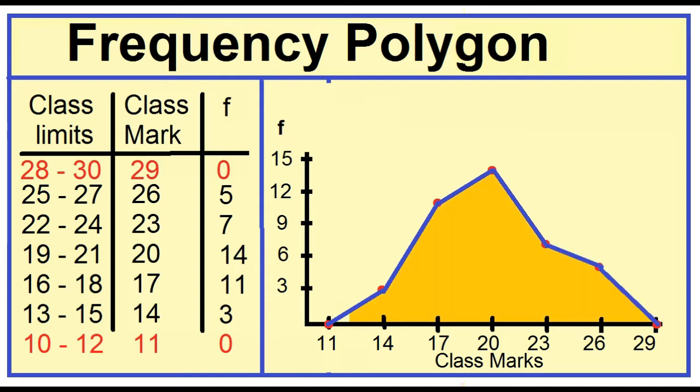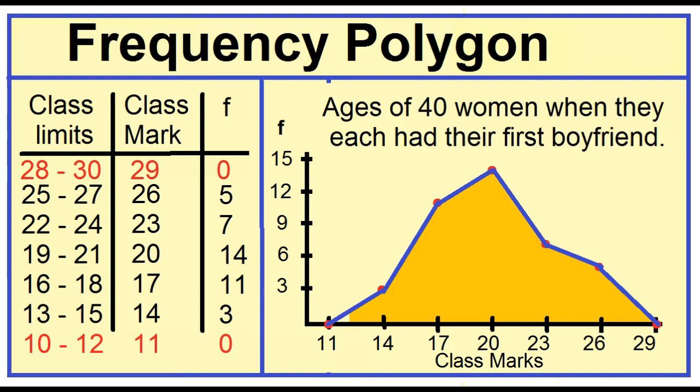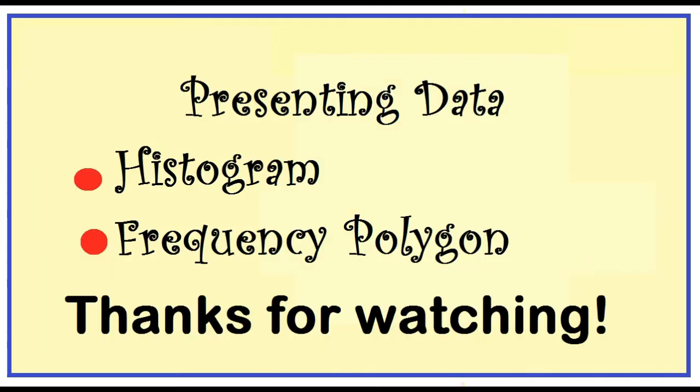This is the frequency polygon of the set of data representing the ages of 40 women when they each had their first boyfriend. A frequency polygon presents the data by using lines that connect points plotted for the frequencies at the class marks of the classes. Thanks for watching.